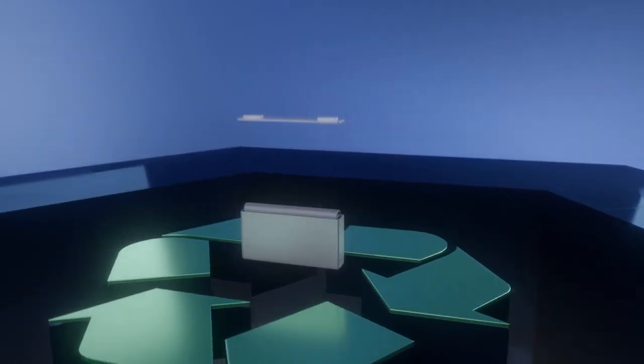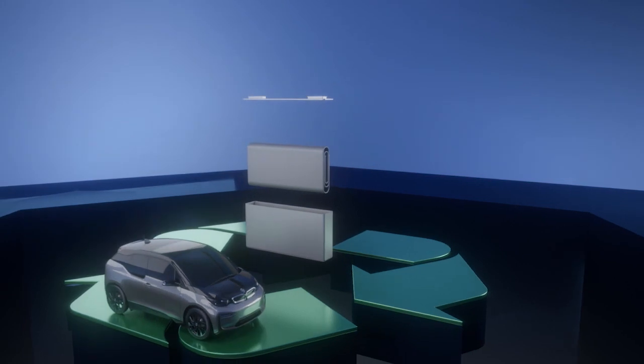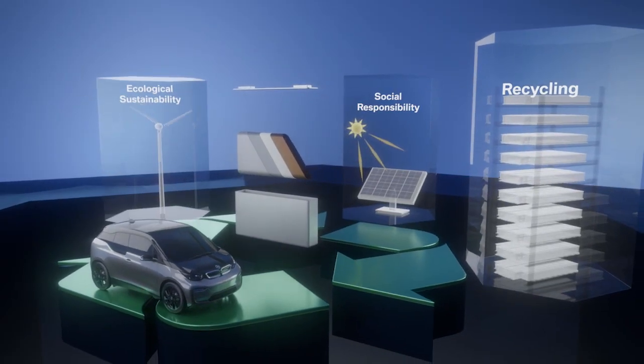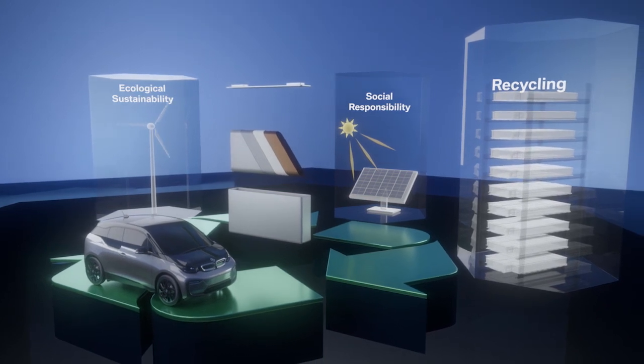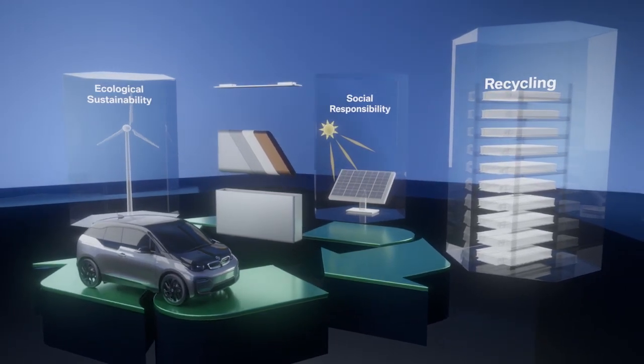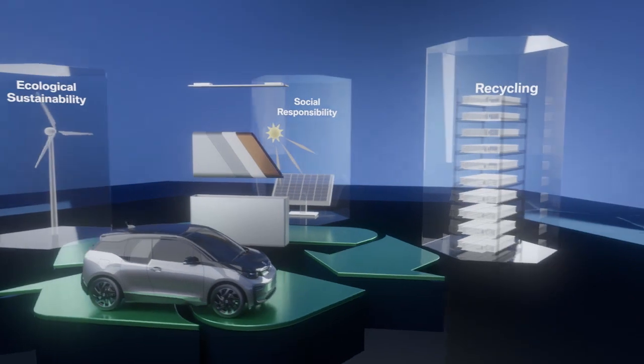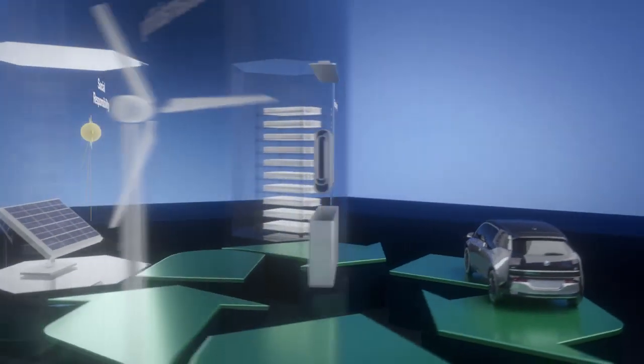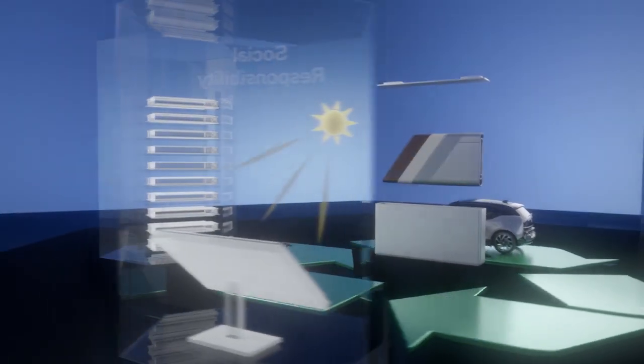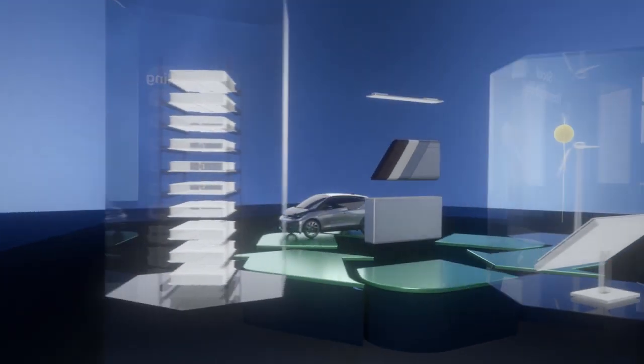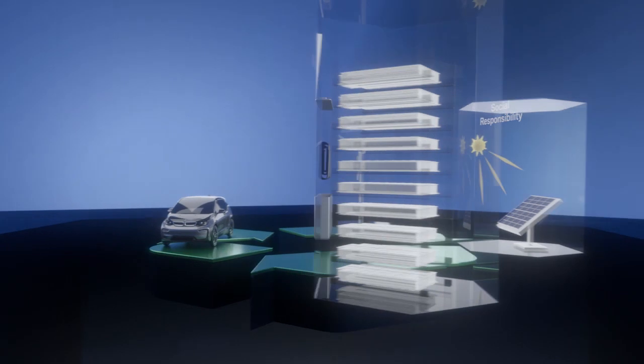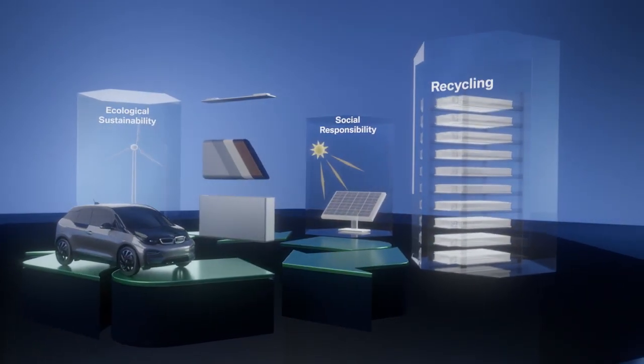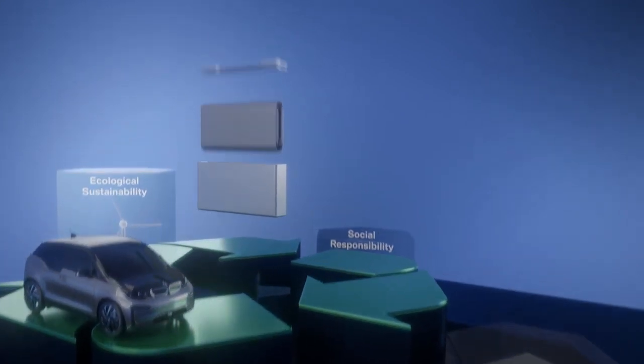However, electric mobility comes as a pair with sustainability. Environmental compatibility and social sustainability at all stages, from the mining of the raw materials used through their processing and finally recycling, are key elements. Together with various economic criteria, these considerations are incorporated into every battery cell development process to ensure that the BMW Group's batteries can be manufactured sustainably.